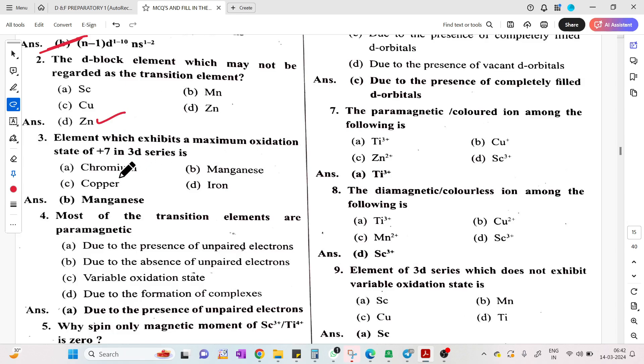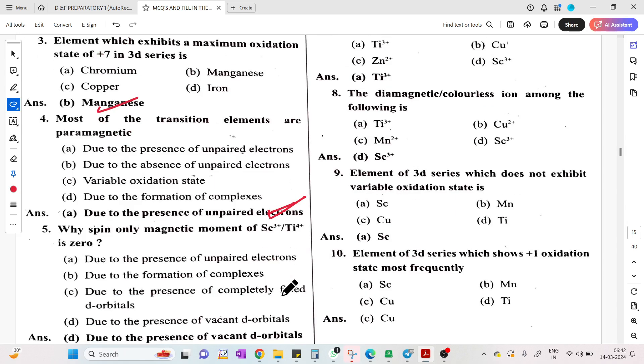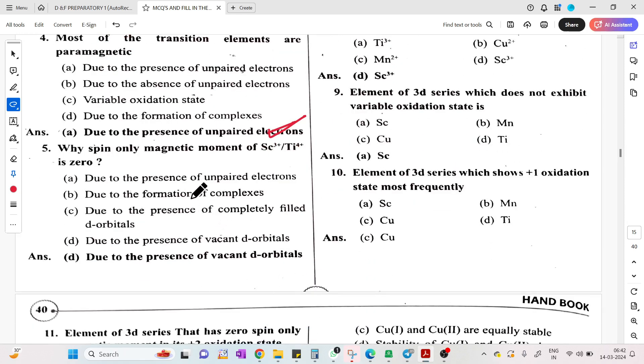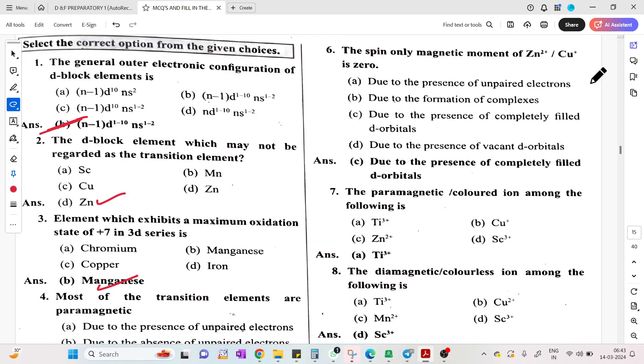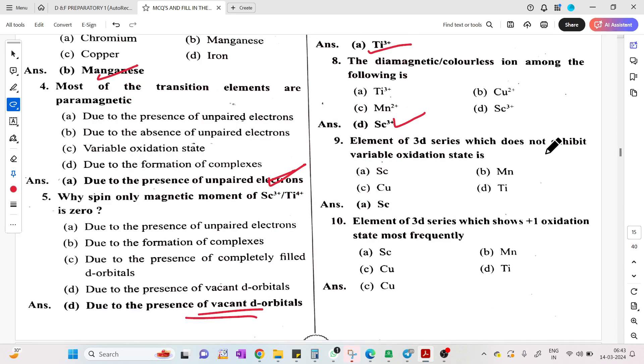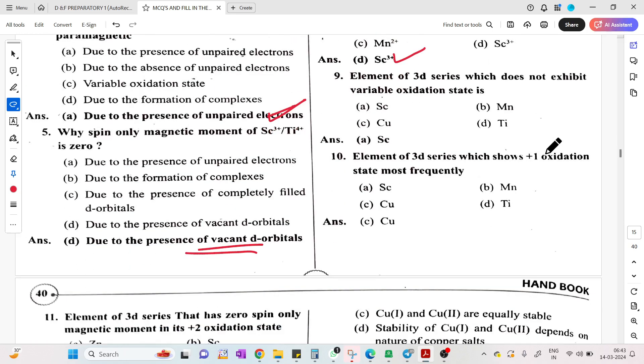D-block elements may be regarded as transition elements, but zinc may not be. Element which exhibits maximum oxidation state plus 7 is manganese. Most transition elements are paramagnetic due to presence of unpaired electrons. Why is spin only magnetic moment of Sc3+ or Ti4+ zero? Because there are no unpaired electrons or vacant d-orbitals.